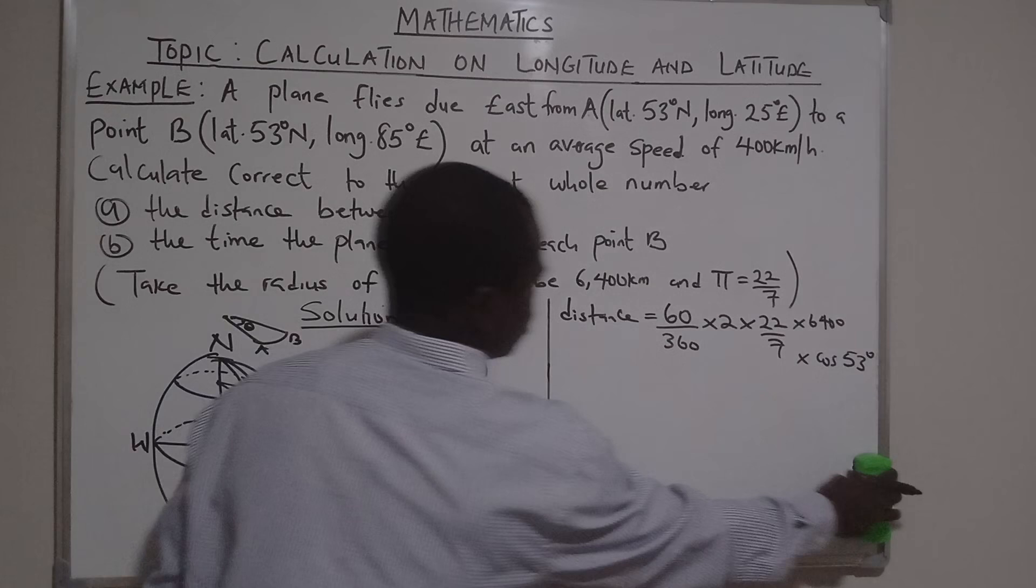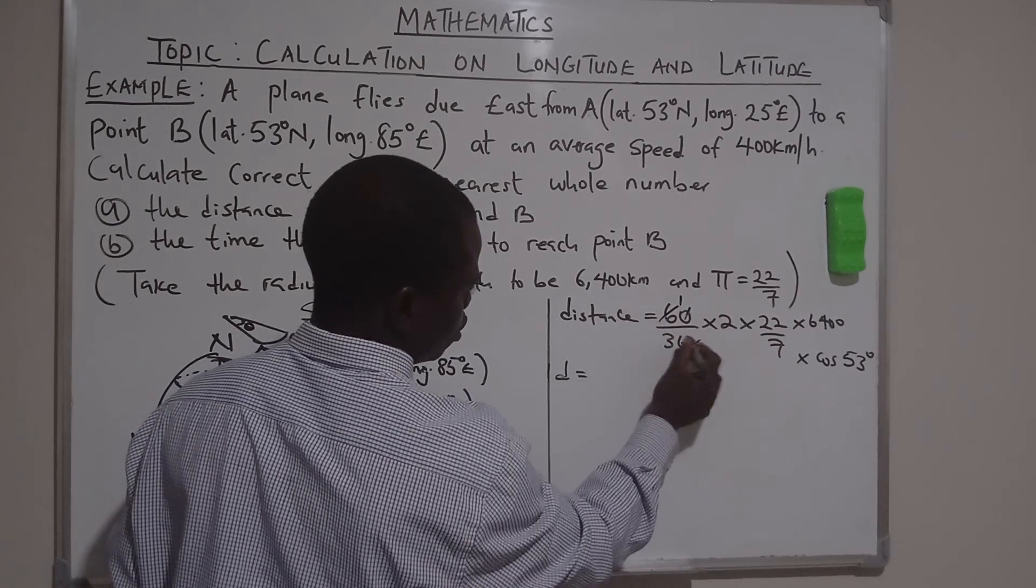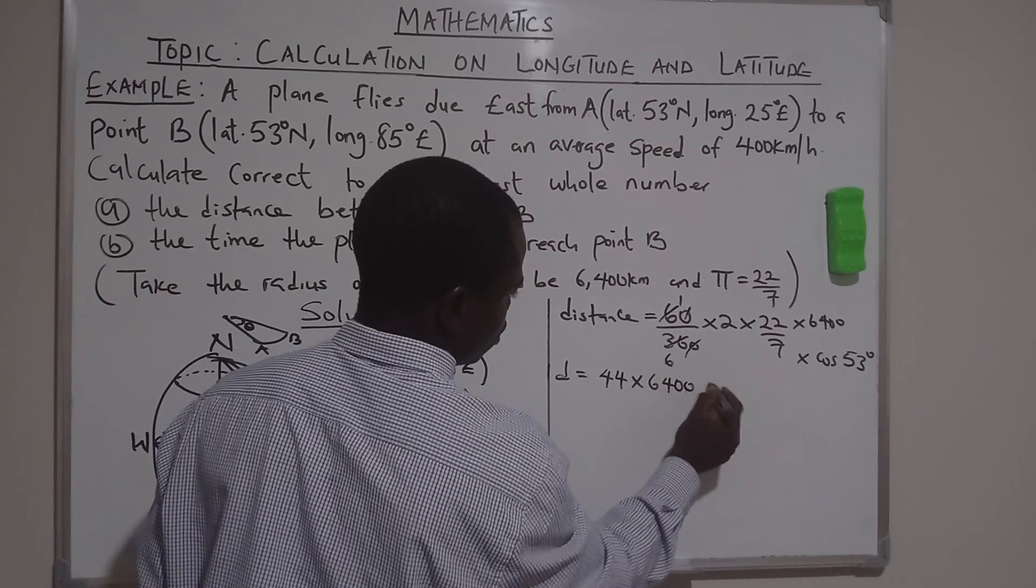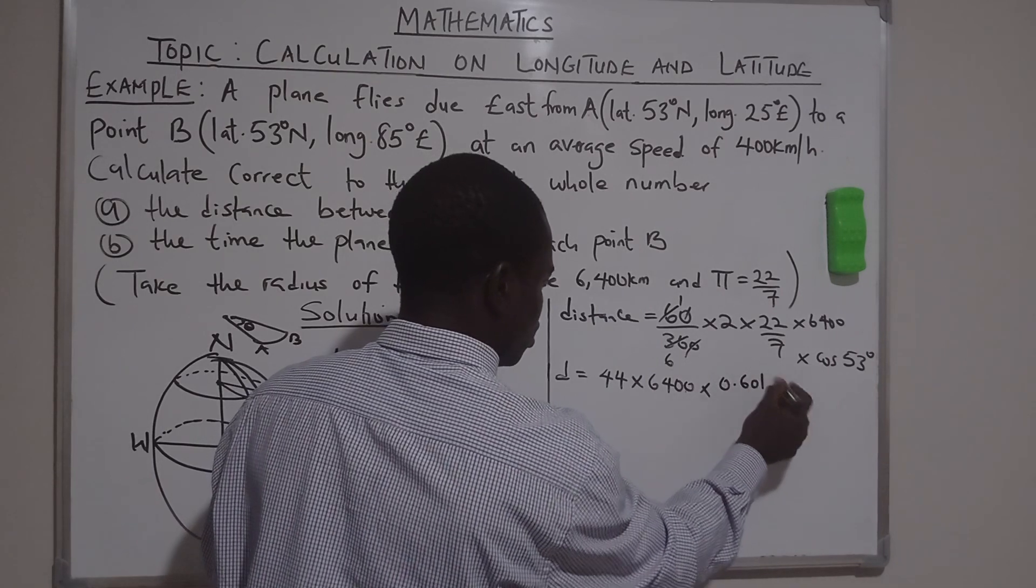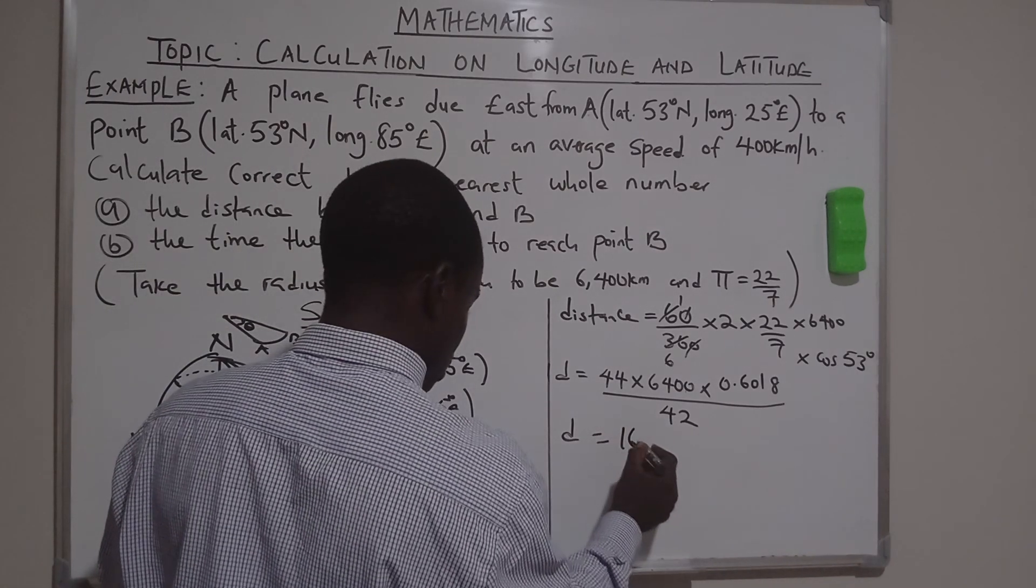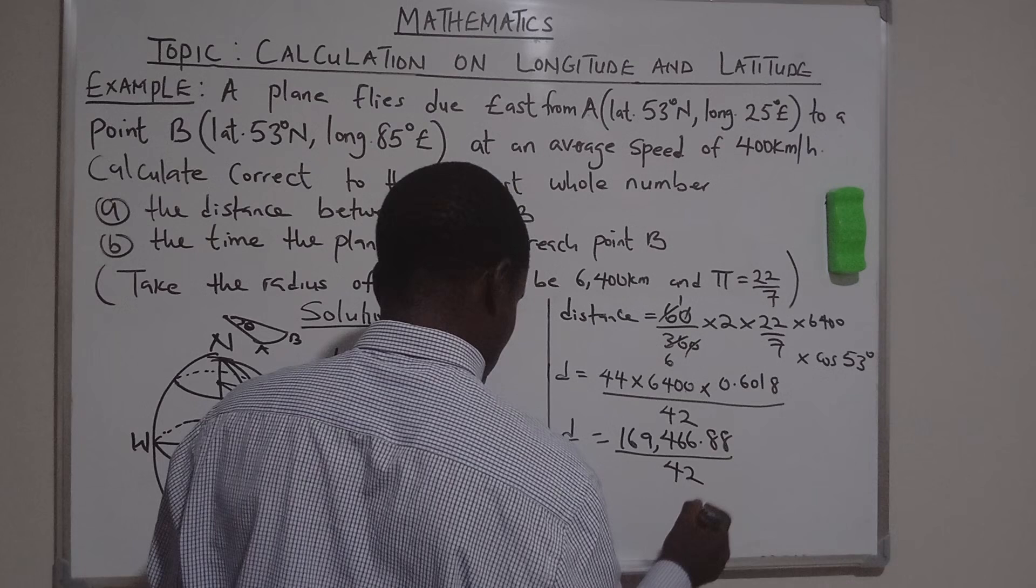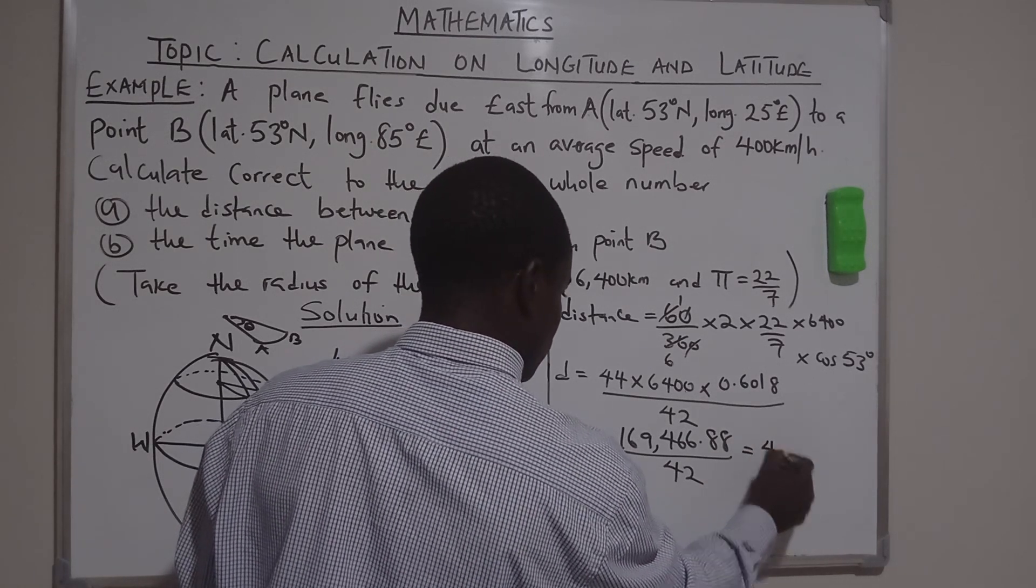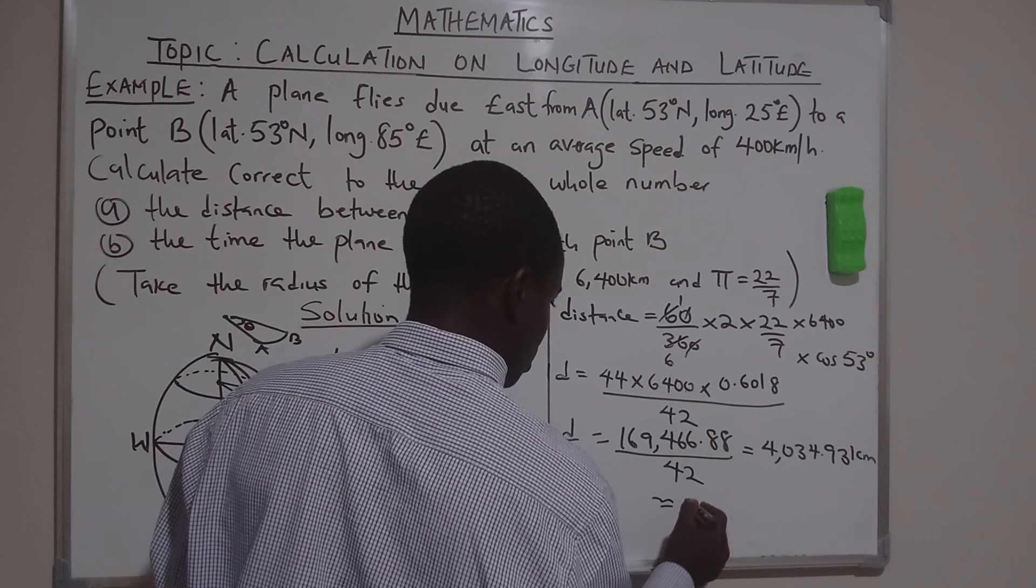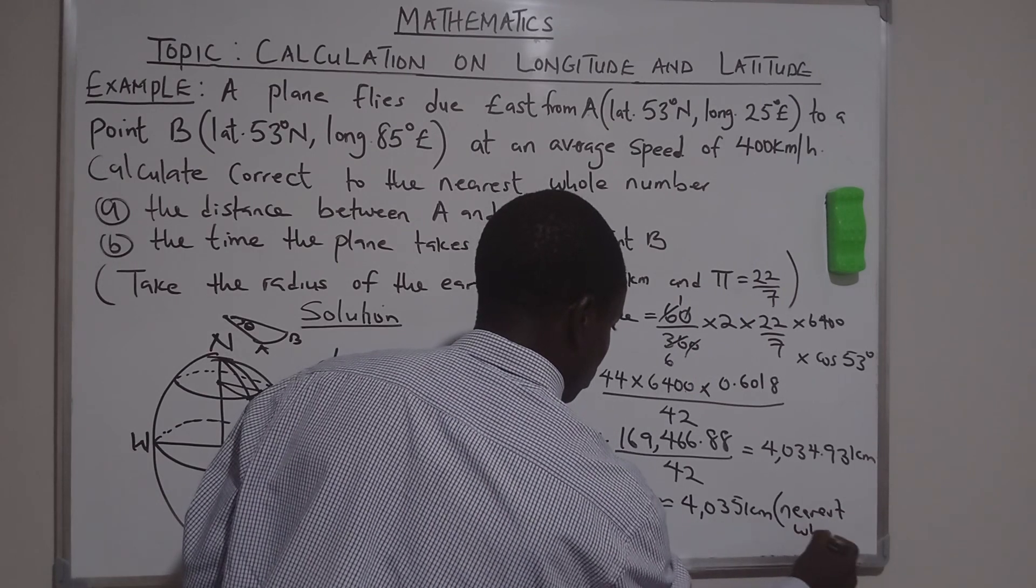Now you have distance, this tends to be zero times zero with 6166 will be 44 times 6400 times cos 53, 0.6018, divided by 42. You multiply that, you have 169,466.88 divided by 42, which equals to 4034.93 kilometers, approximately 4035 kilometers to the nearest whole number.